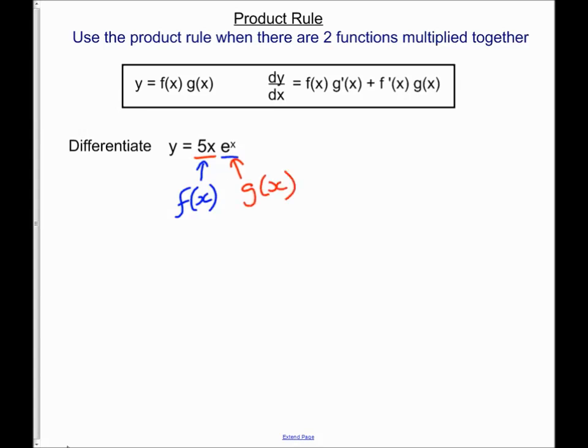So I've got f of x, I've got g of x, f of x equals 5x, g of x equals e to the x.